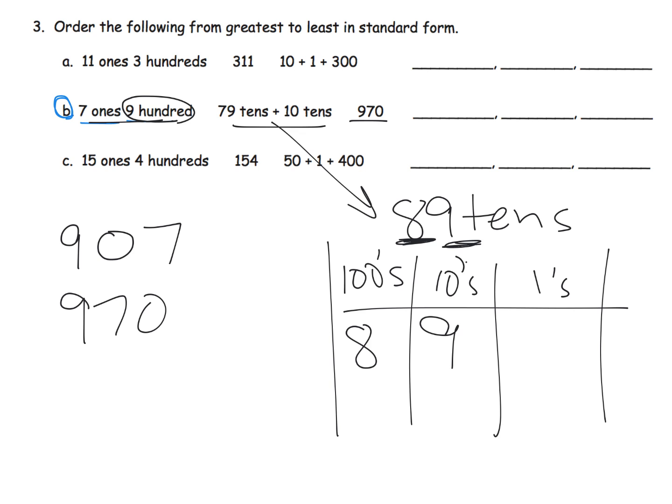Did we mention anything about the ones? Nope. That means there are no ones. So we have eight hundred ninety.